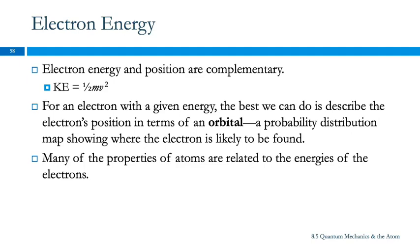The best we can do, if we have an electron with a given energy, is to describe where it is in terms of an orbital — a region of probability where the electron is likely to be found.